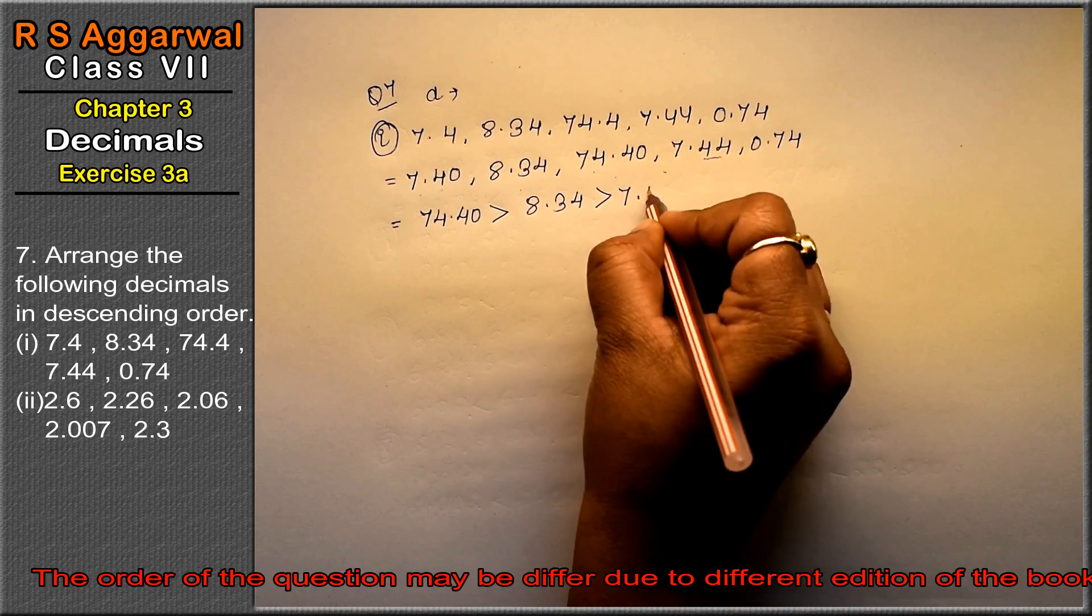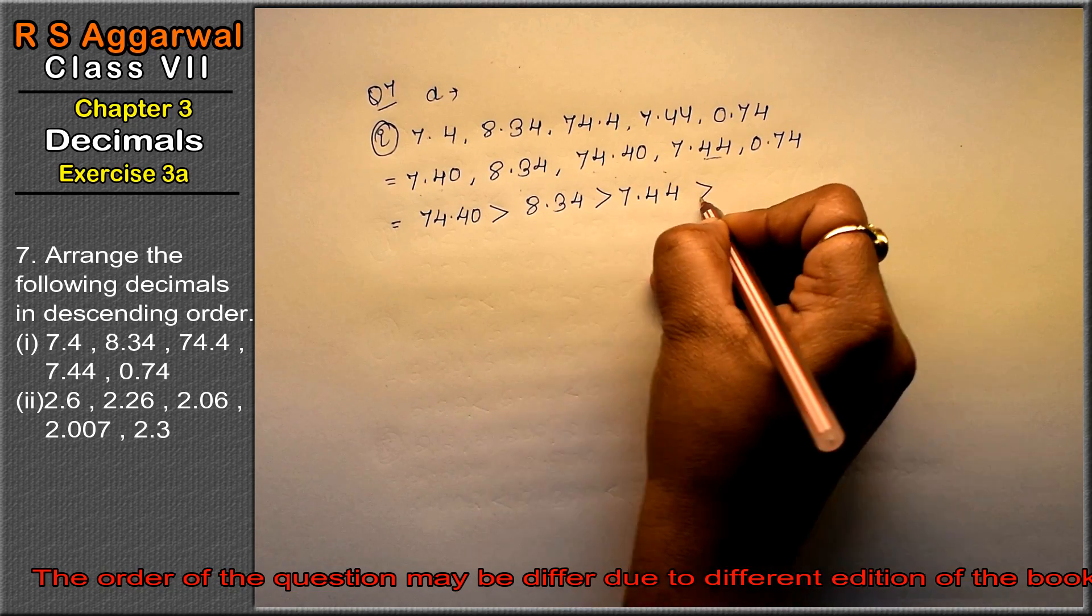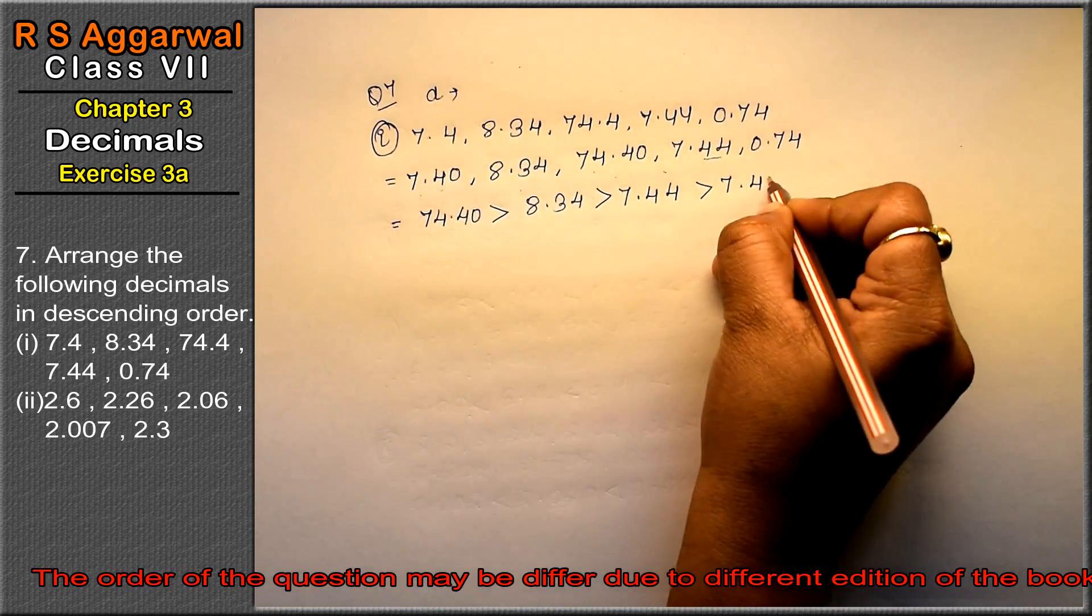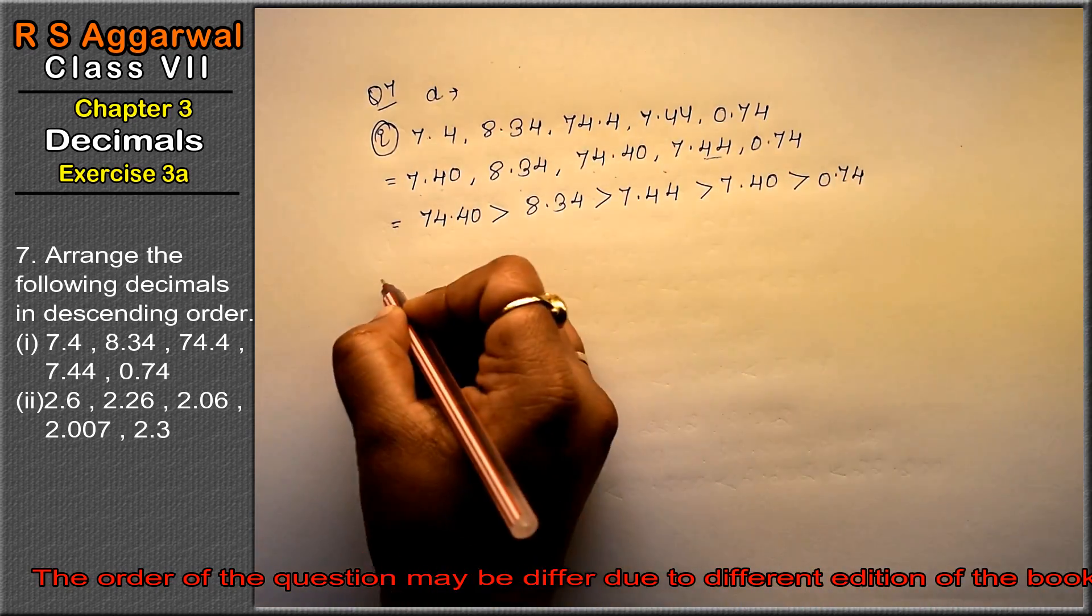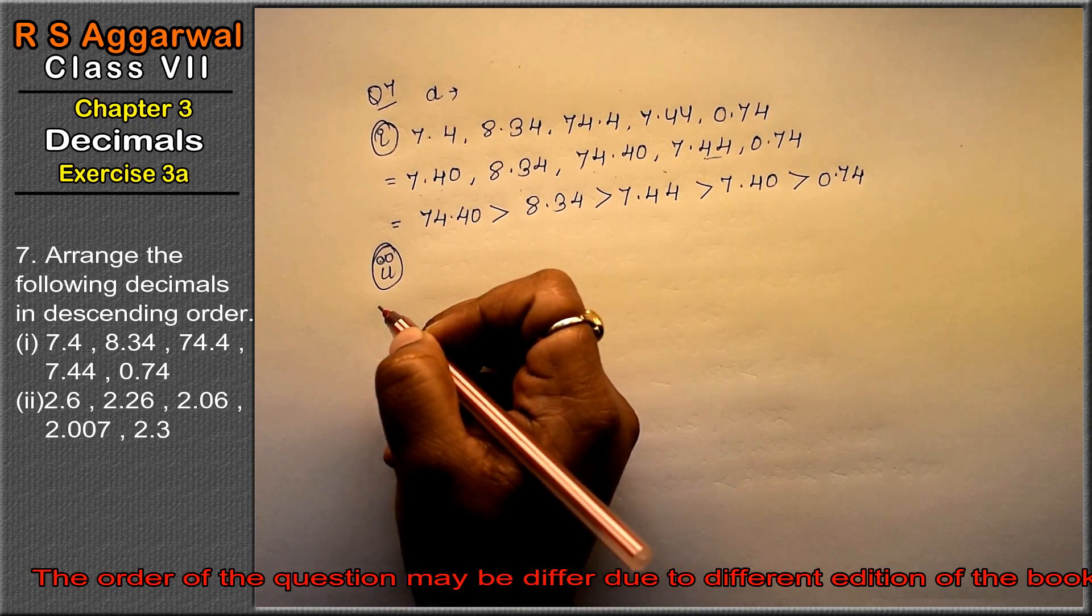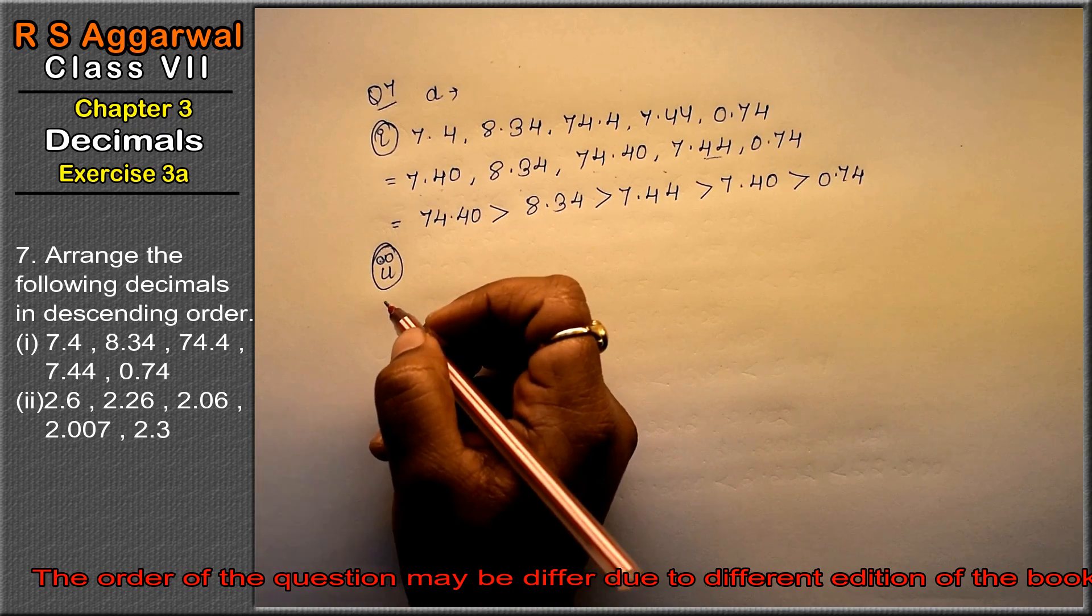Right friends? So the order is: 74.40, then 8.34, then 7.44, then 7.40, and then 0.74. You only need to understand it mentally, not write the extra zeros.